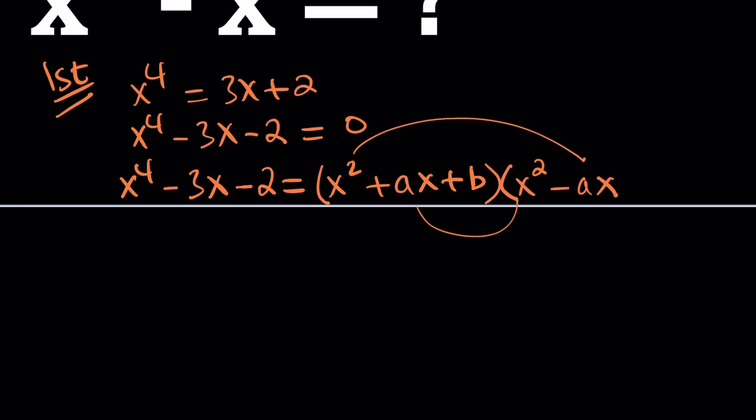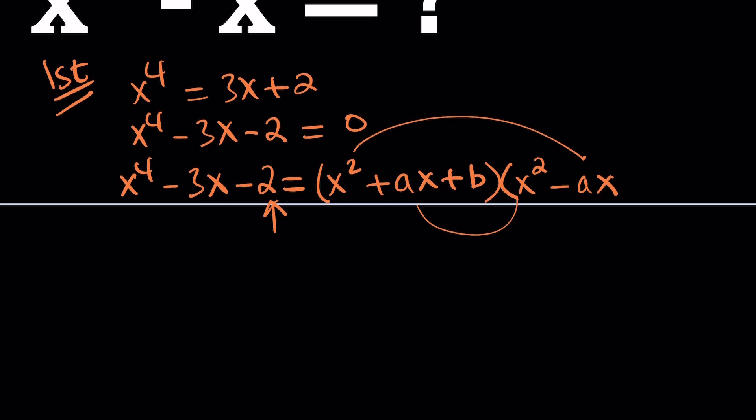That's why we need this type of structure. But not only that, to get the constant term, we need to multiply b by c. But bc is supposed to be negative 2, which means I can replace c with negative 2 divided by b. Because b multiplied by negative 2 over b is actually negative 2. So, we eliminate the number of variables. We want to get as low as possible. In this case, there's only 2, a and b. So, we should be able to solve for a and b.